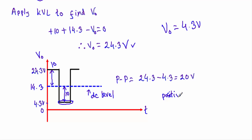This confirms it is a positive clamper circuit. The input peak-to-peak voltage was 20V. Here the maximum peak is 24.3V and the minimum peak is 4.3V, so the peak-to-peak output voltage is 24.3 − 4.3 = 20V. The peak-to-peak value is preserved, confirming our analysis is correct. That's it, thank you.